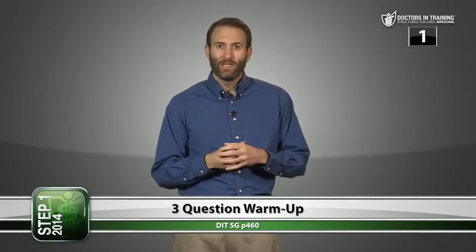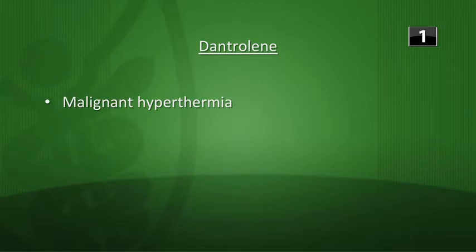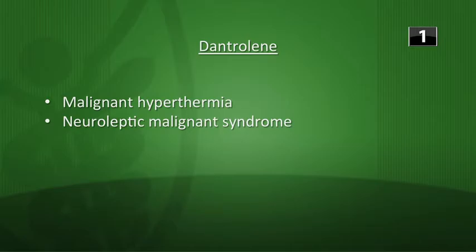It's time for the three-question warm-up for Biochem 11. For what conditions is dantrolene useful? It can be used for malignant hyperthermia or for neuroleptic malignant syndrome from certain antipsychotic drugs.